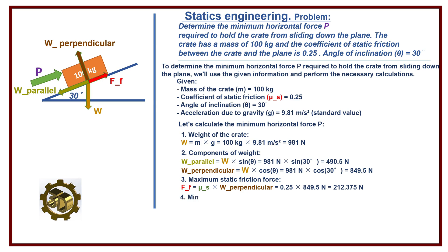Minimum horizontal force P: P equals W parallel minus F_F equals 490.5 minus 212.375 equals 278.125 newtons.